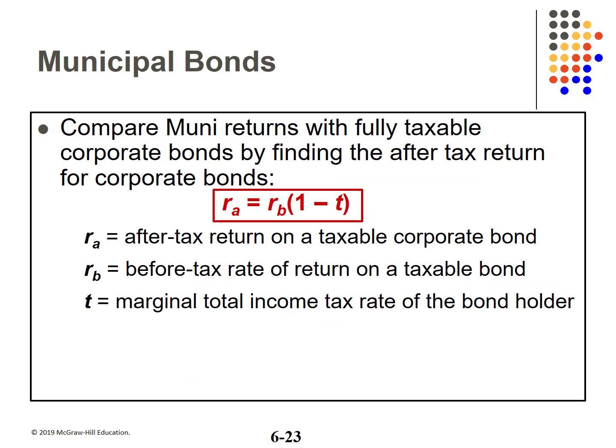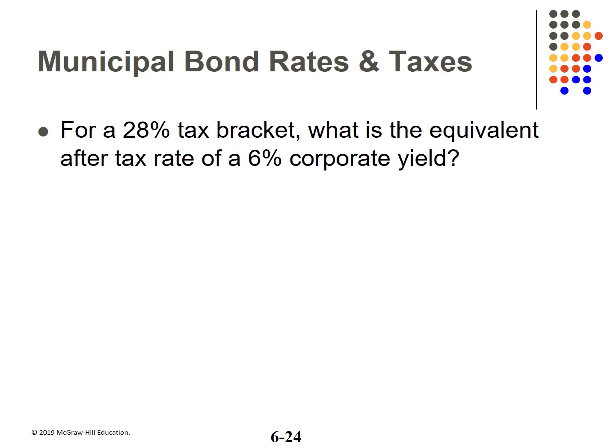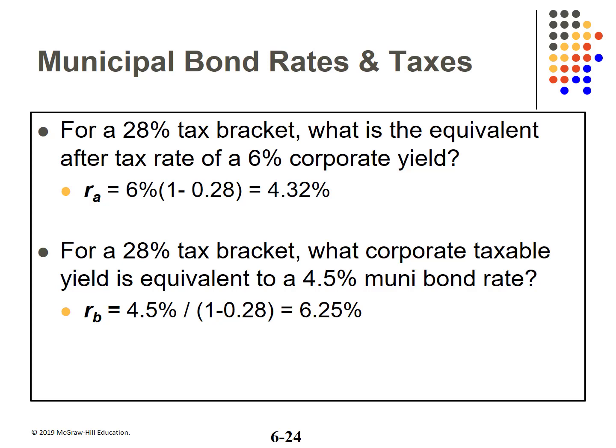Due to their tax-exempt status, we need to compare the return on a muni versus the return on a taxable corporate bond. RA is the after-tax return on a corporate bond, RB is the before-tax return, and T is the marginal tax rate of the investor. Alternatively, you can convert the muni rate to a tax equivalent rate. Given a 28% marginal tax rate, the after-tax yield on a 6% bond is 4.32%. Going the other way, the taxable equivalent of a 4.5% muni is 6.25%.